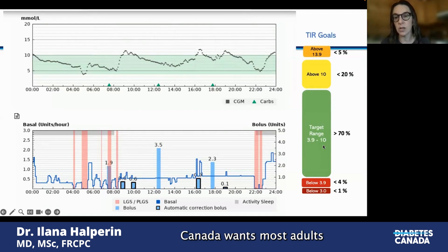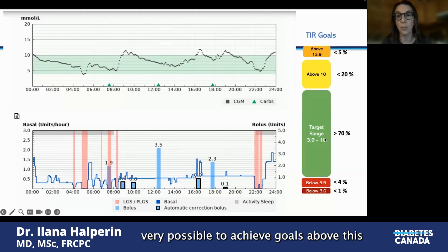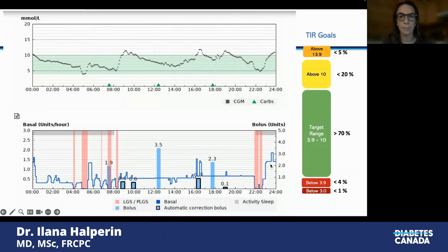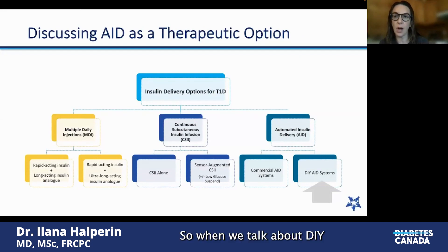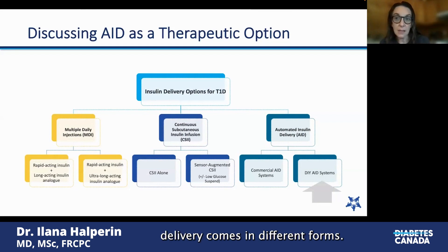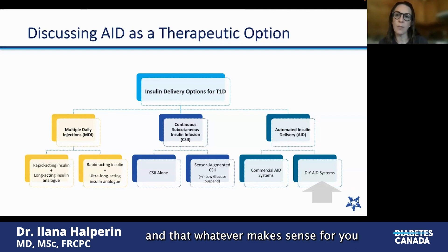Diabetes Canada wants most adults living with type 1 diabetes to spend about 70% of their time in the target range of 3.9 to 10 millimoles per liter. But with automated insulin delivery, it's very possible to achieve greater than 70% time in range and much less than 4% hypoglycemia. When we talk about DIY systems, they're part of a larger spectrum of insulin delivery options — from multiple daily injections to insulin pumps to automated insulin delivery, in both commercial and DIY forms. Our patients should have choices along this spectrum, and whatever makes sense for you and how you want to manage your diabetes, your team should be supporting you.